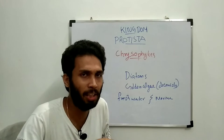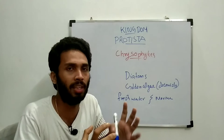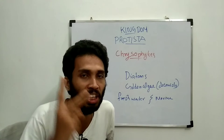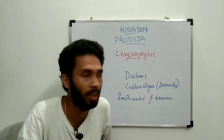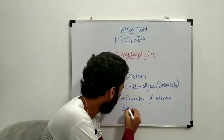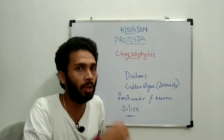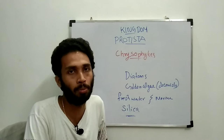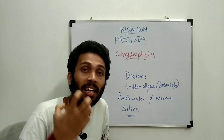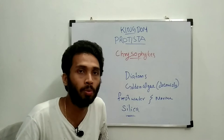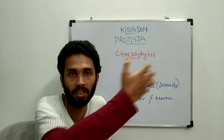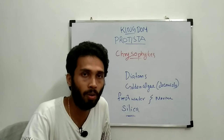They have two thin, overlapping shells and a cell wall. This cell wall has a coating of silica. The cell wall can degrade after the organism dies due to microbial action, but this silica coating is very resistant and can persist for many years, leaving behind cell wall deposits.